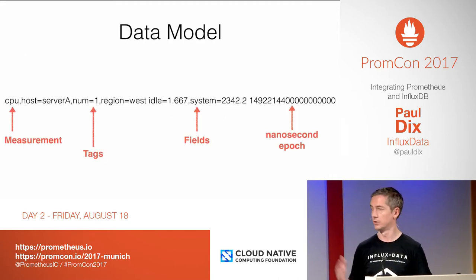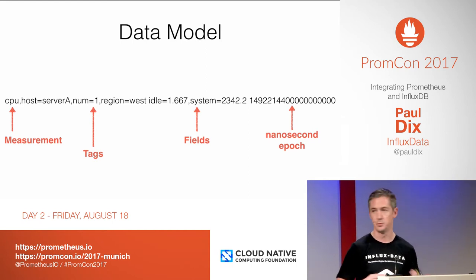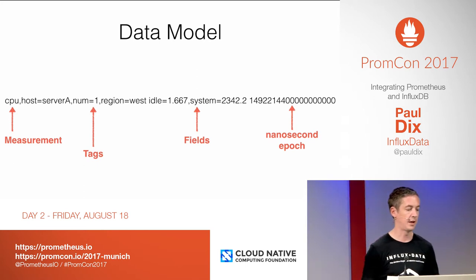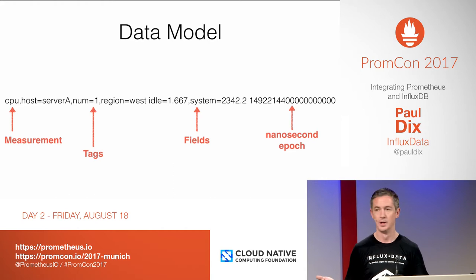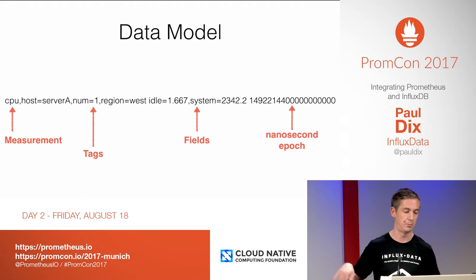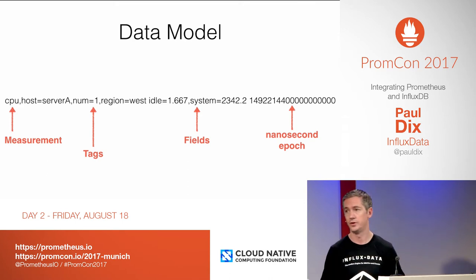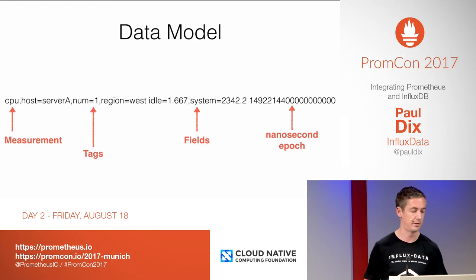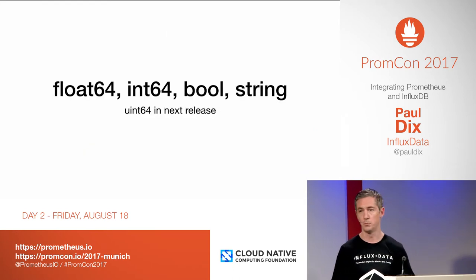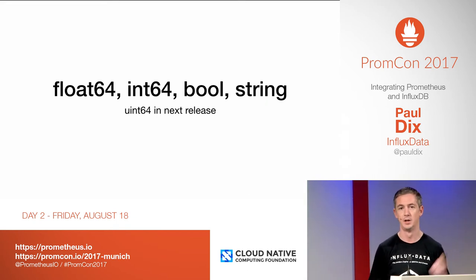The data model looks like this: you have a measurement name, which is a string - kind of like a metric in Prometheus. You have tags, which are key-value pairs like Prometheus labels. Unlike Prometheus, you also have fields, which are key-value pairs with a field identifier and value. You have a nanosecond-scale epoch, which is different from Prometheus, which stores at millisecond precision. We support float64, int64, booleans, and string types, and we're adding uint64 in the next release.